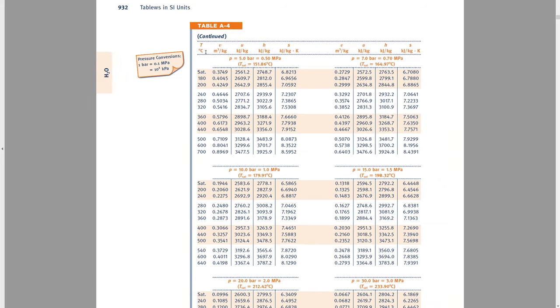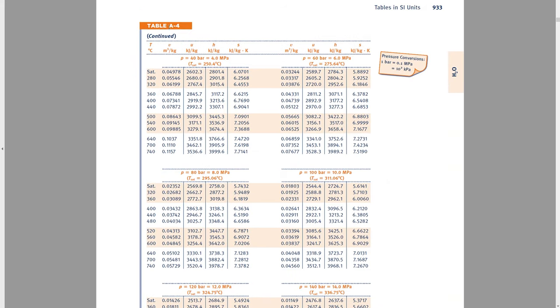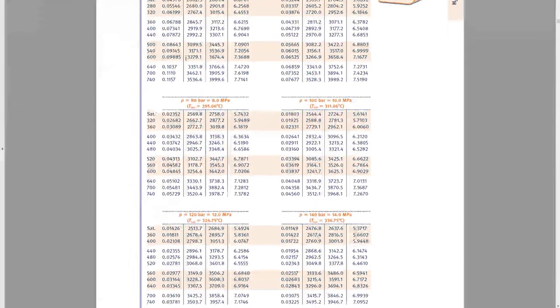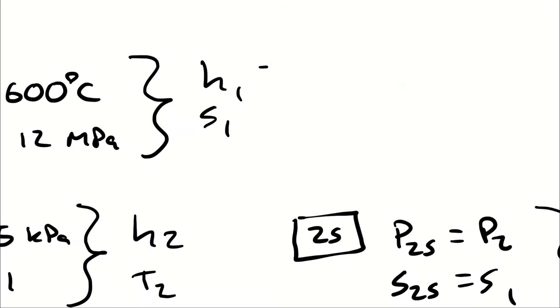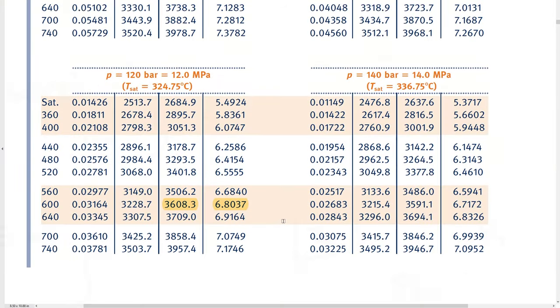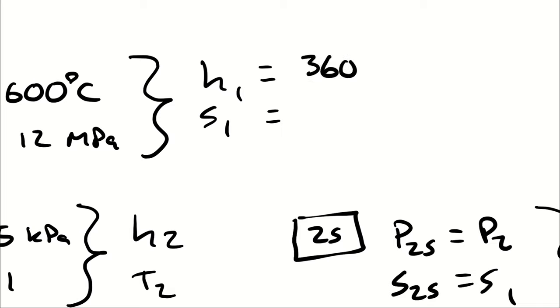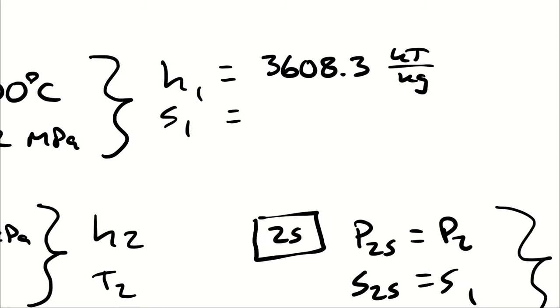So I'm going to go into my superheated vapor tables. I'm going to find 12 megapascals. And I see that my enthalpy at a temperature of 600 degrees Celsius and a pressure of 12 megapascals is 3,608.3. Furthermore, my entropy is going to be 6.8037. So H1 and S1 are 3,608.3 kilojoules per kilogram and 6.8037 kilojoules per kilogram Kelvin.